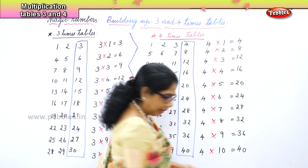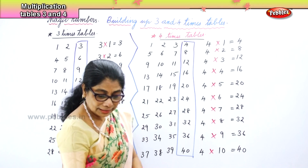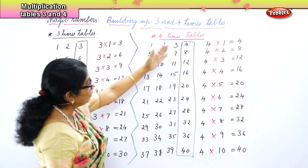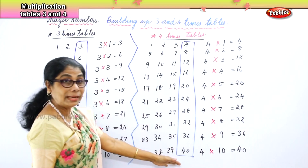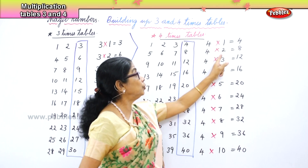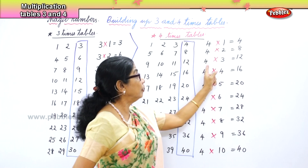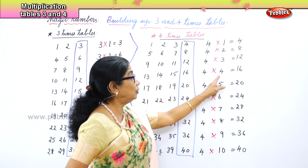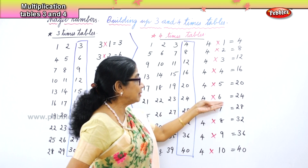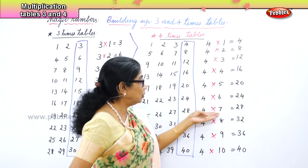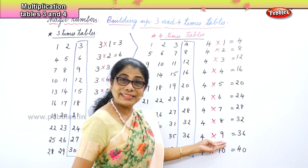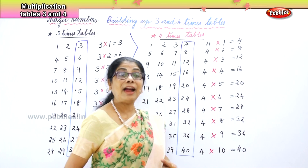Now we will read together. We learned to do the numbers with the magic number method and then we find we have the tables in front of us. Four ones are four. Four twos are eight. Four threes are twelve. Four fours are sixteen. Four fives are twenty. Four sixes are twenty-four. Four sevens are twenty-eight. Four eights are thirty-two. Four nines are thirty-six. And four tens are forty.